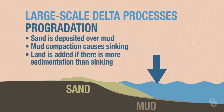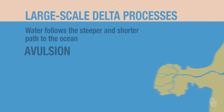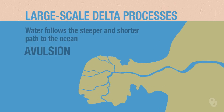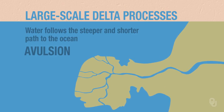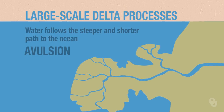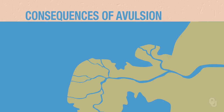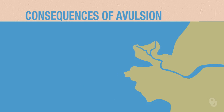Eventually, however, the delta will build out so far that there's a shorter and steeper path to the ocean. The water will follow the steeper and shorter path. This is called avulsion, and you can see it here in this figure. Here is the original river and delta, and then at some point the river will avulse and seek a shorter and steeper path to the ocean, and a new delta will form. Avulsion is a very important process on deltas. The major consequence is that the old delta lobe sinks and the new delta lobe forms.